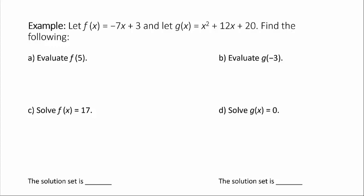In this example, we're given two functions represented symbolically, that is, we have a formula for them. And for each function, we're asked to evaluate the function for a given input, and we're also asked to find an input given an output. Let f(x) equal -7x + 3, and let g(x) equal x² + 12x + 20. Find the following.